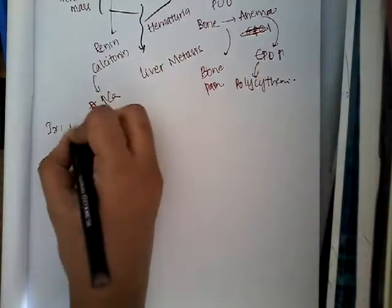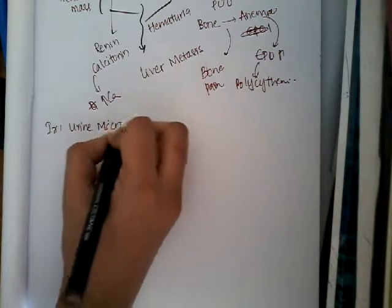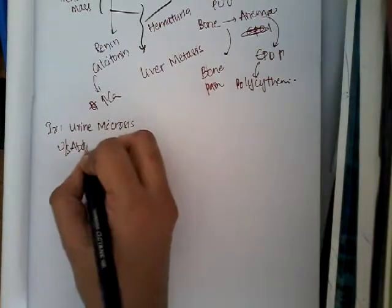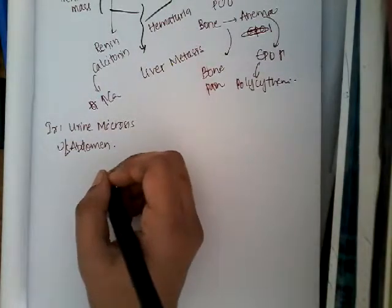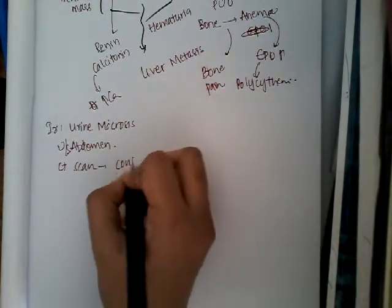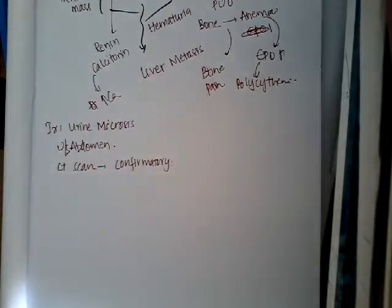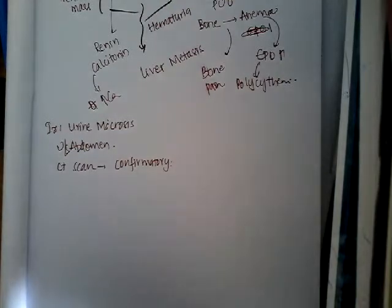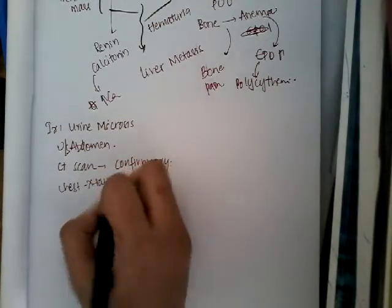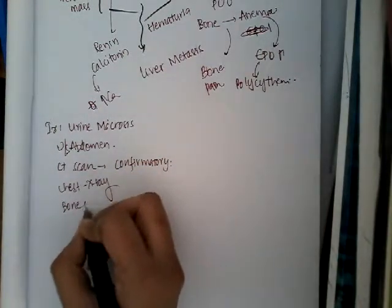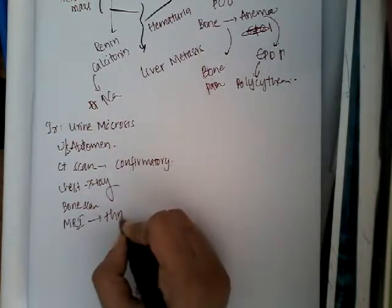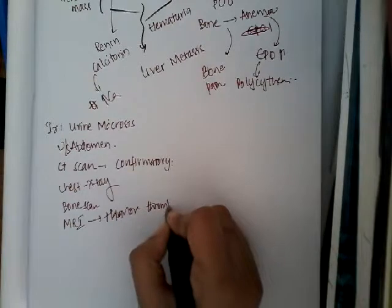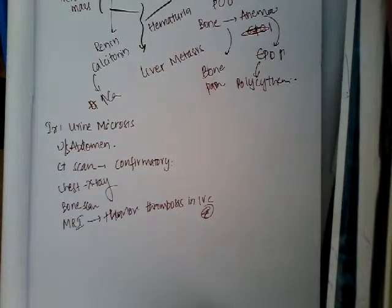Investigations include urine microscopy for RBC casts. Ultrasound abdomen is done to see the mass, its texture, and any calcifications. CT scan is confirmatory and also shows the status of the renal vein and any thrombosis. Chest X-ray is done to find pulmonary metastasis, and bone scan for bone metastasis. For tumor thrombosis in the IVC, MRI is the best scan.